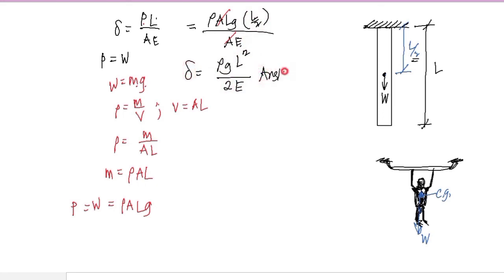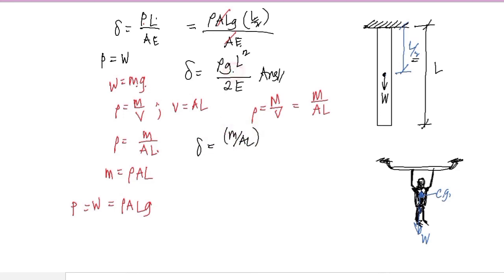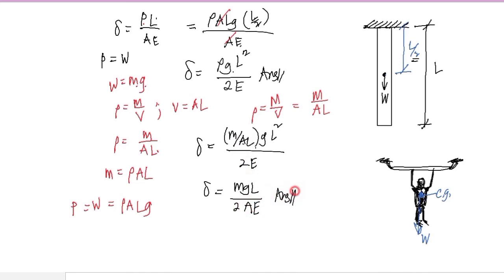The area cancels out, and we have density times gravity times L squared over 2 times the modulus of elasticity, giving delta equals rho·G·L squared over 2E. For situation 2, expressing in terms of mass M: since density equals mass over AL, substituting gives deformation equals M over AL times G·L squared over 2E, which simplifies to MGL over 2AE. This is our answer.